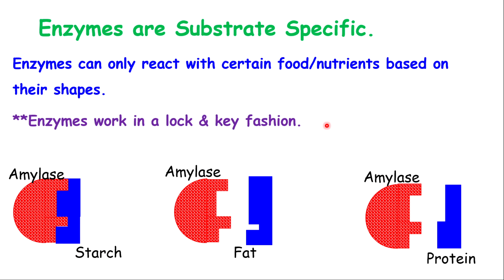Another property is that enzymes are substrate-specific, just like a lock and key. Enzymes can only react with certain food or nutrients based on their shapes, and for this reason, enzymes work in a lock and key fashion. For example, if you have amylase and starch, the amylase and starch can lock into each other and a reaction can take place. If you have the same amylase but a fat instead, because of the shape of the fat, it cannot fit into the amylase — hence there will be no reaction. If you have amylase and a protein, the shapes will be totally different — hence no reaction. So enzymes are substrate-specific; they only break down specific food or nutrients.